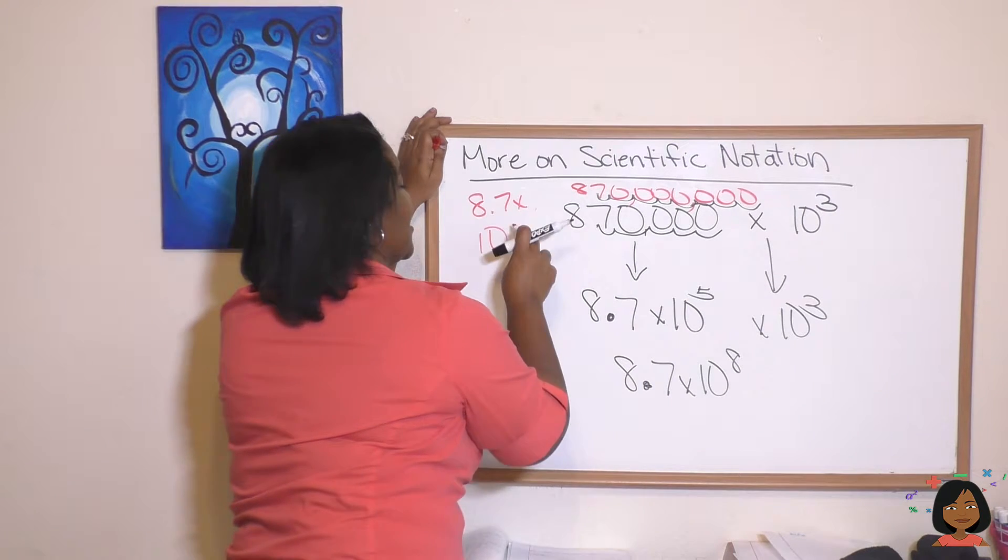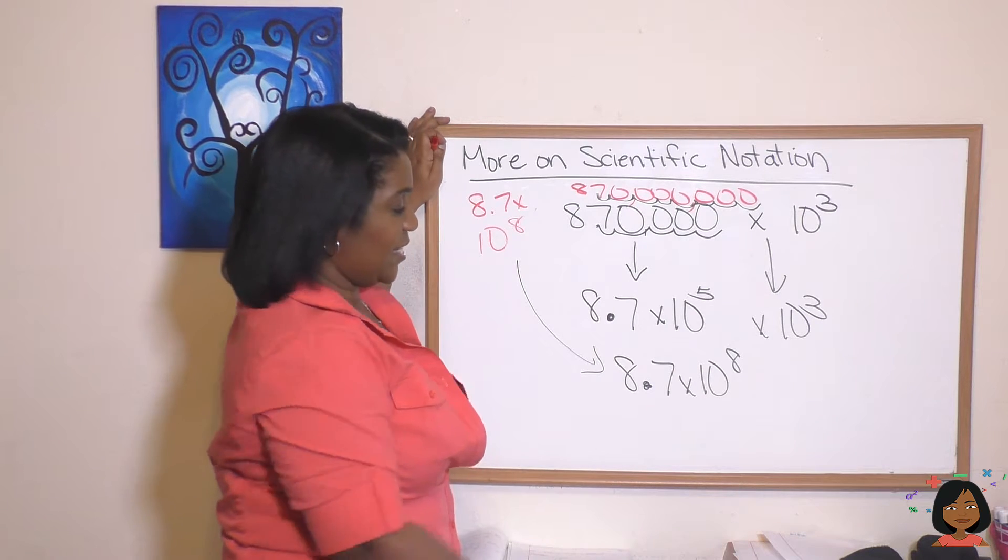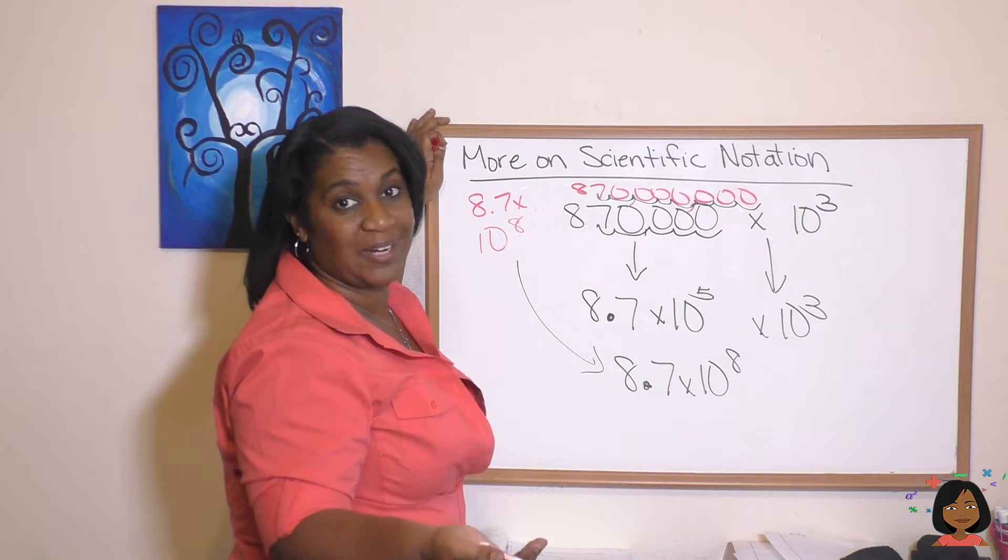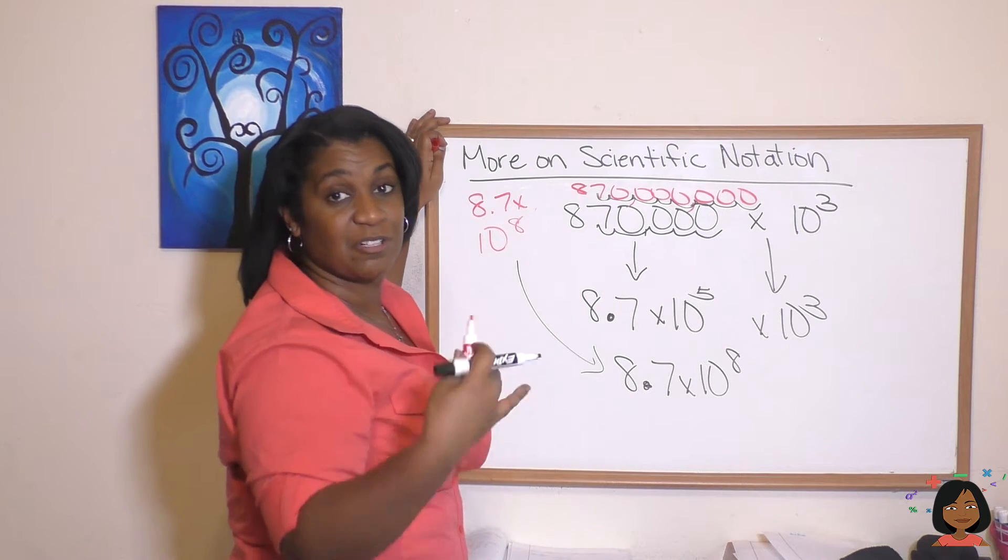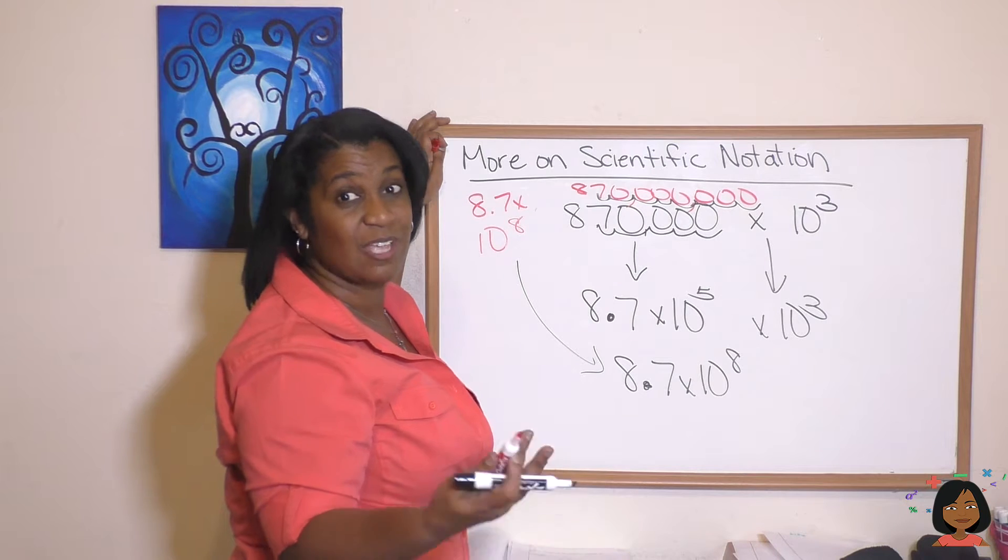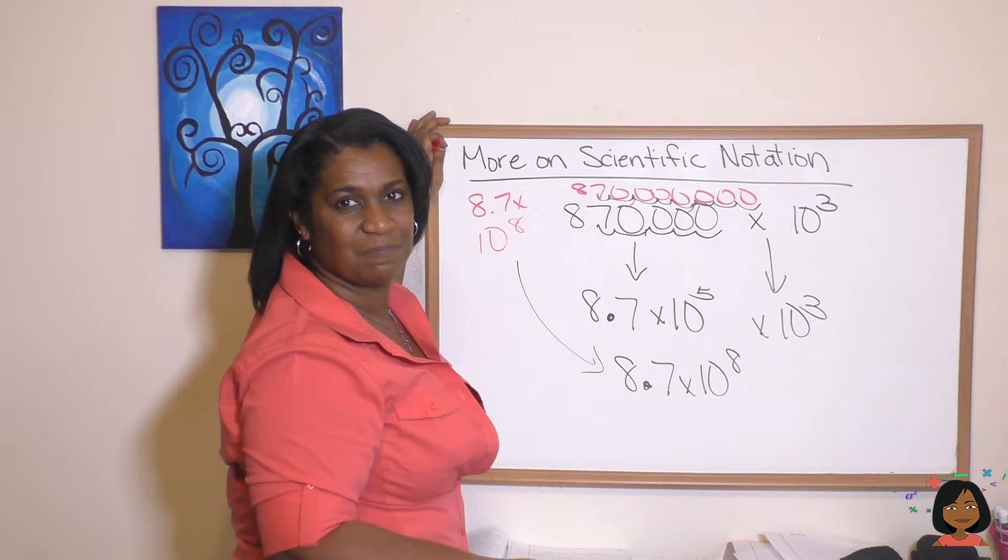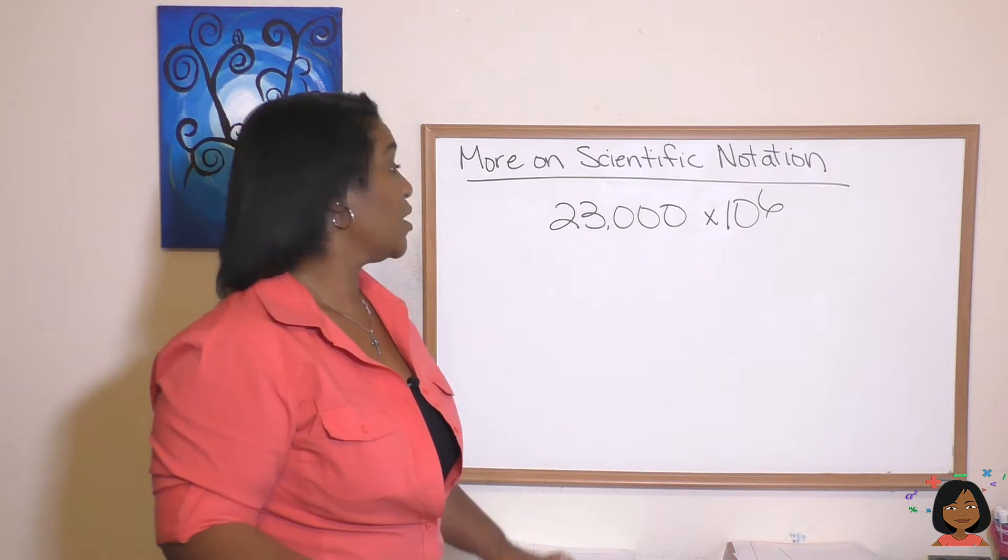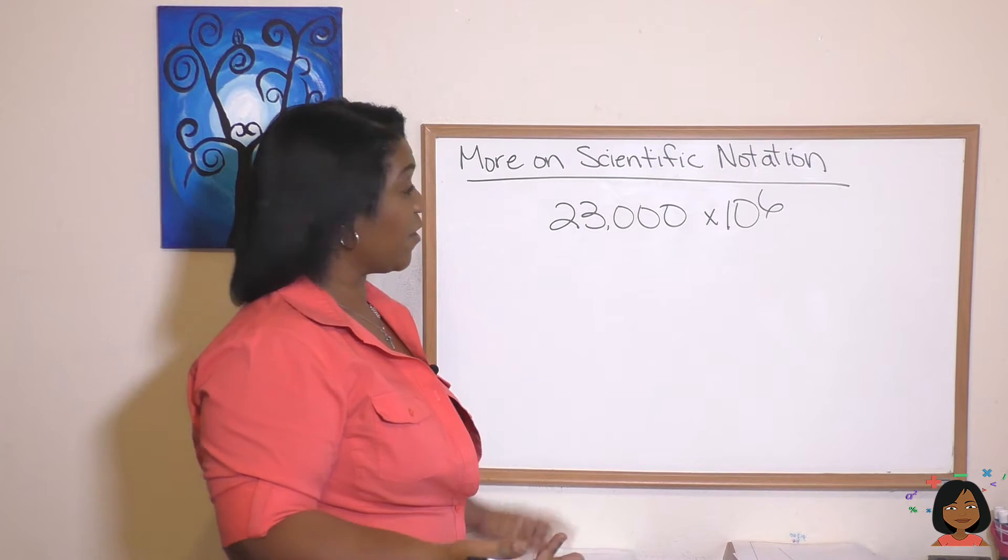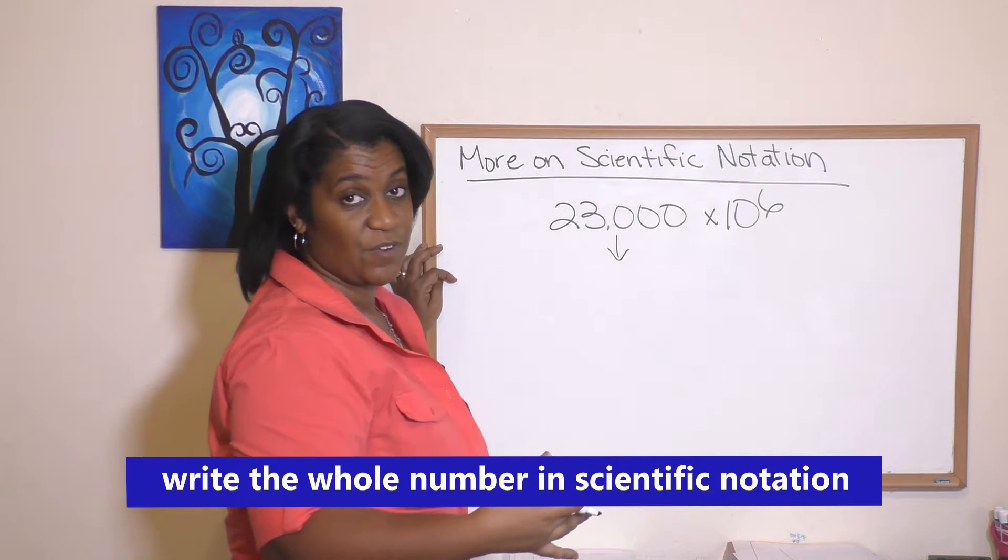And look at that! Isn't that the same thing? Isn't it nicer just to be able to add your exponents? So the rule here is: turn this into your decimal, add your exponents. How will we tackle this problem? 23,000 times ten to the sixth power. Remember, first take this first number and turn it into its scientific notation.